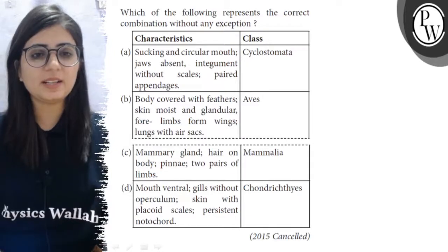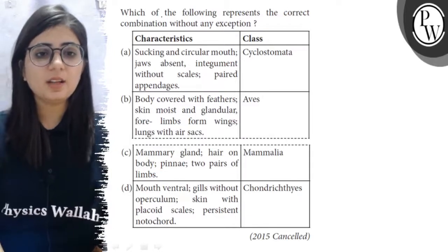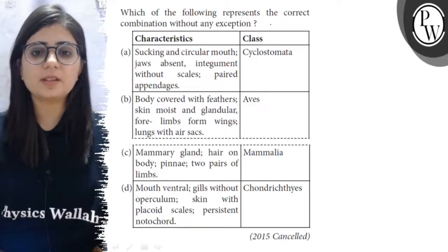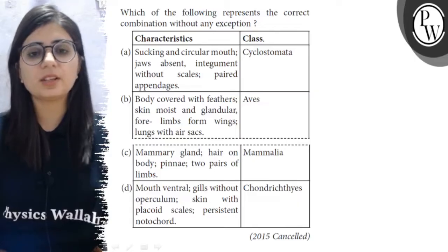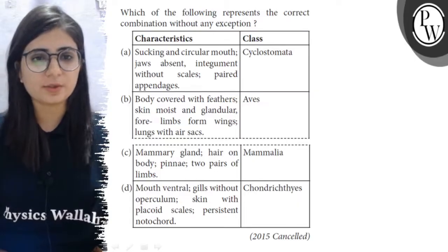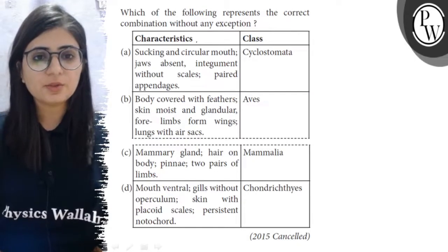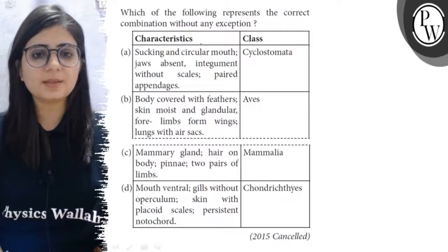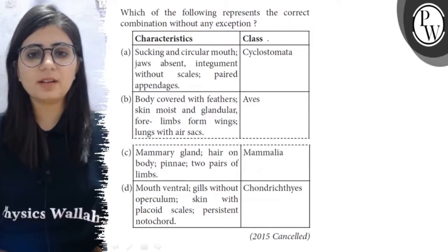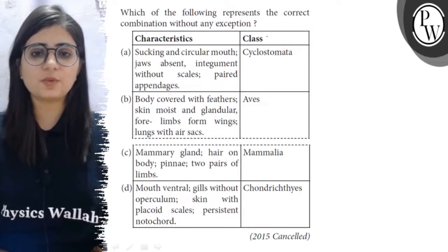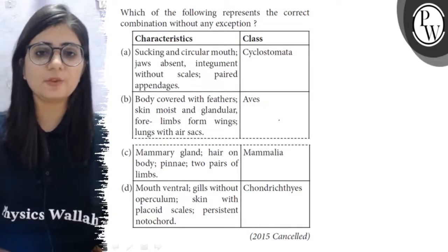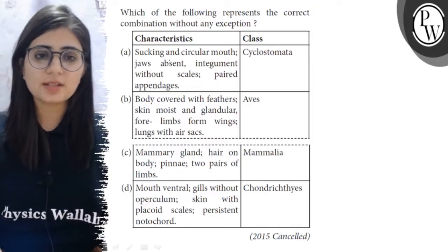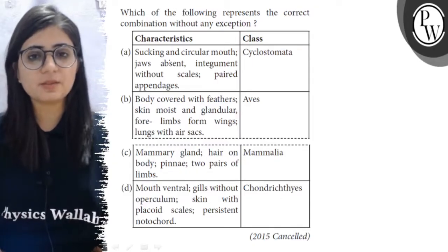Hello. Let's see the statement: which of the following represents the correct combination without any exception? Here the characteristics of organisms are given, and here the class to which they belong is given. We have to find out the correct match. Let's see the statements one by one.